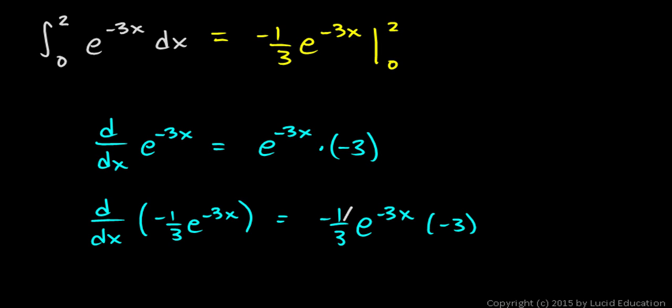And you can see the negative 1 third and the negative 3 will cancel out, just leaving me with e to the negative 3x. So the derivative of negative 1 third e to the negative 3x is e to the negative 3x. And that's exactly the reverse thought process of what we have up here. The integral of e to the negative 3x is negative 1 third e to the negative 3x.